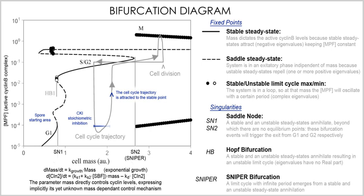In evolutionary game theory, developed first by John Maynard Smith and George R. Price, selection acts directly on inherited phenotypes, without genetic complications. This approach has been mathematically refined to produce the field of adaptive dynamics.